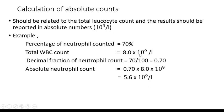As an example, percentage of neutrophils counted is 70%. The total WBC count is 8 into 10 to the power 9 per liter. The decimal fraction of neutrophil count is 0.7. Therefore, the absolute neutrophil count equals 0.7 into 8 into 10 to the power 9, which equals 5.6 into 10 to the power 9 per liter.